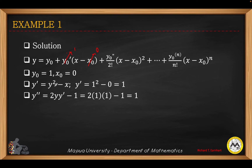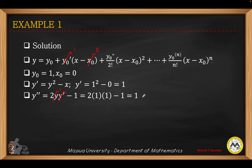Next we get the second derivative. For y double prime, the derivative of y squared is 2y. Since y is our dependent variable, we multiply it by y prime. Then, the derivative of minus x is minus 1. After differentiating, we substitute the values. We already have y prime which is 1, and the value of y is 1. So we have 2 times 1 times 1 minus 1, which gives 1. So y double prime at the initial values is also 1.